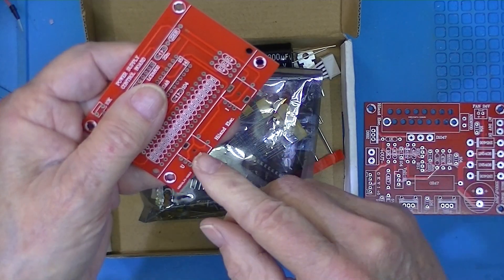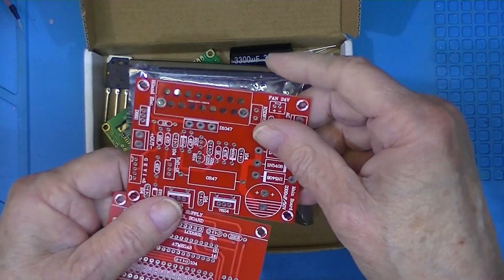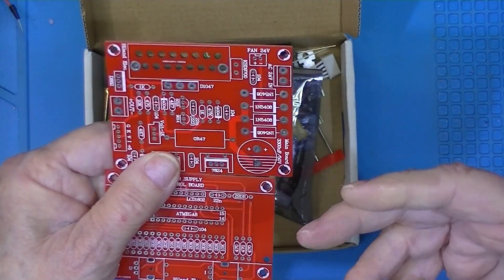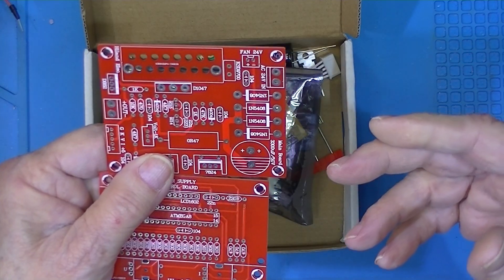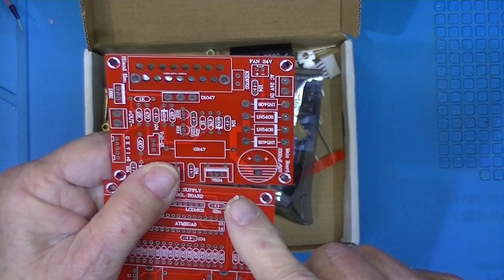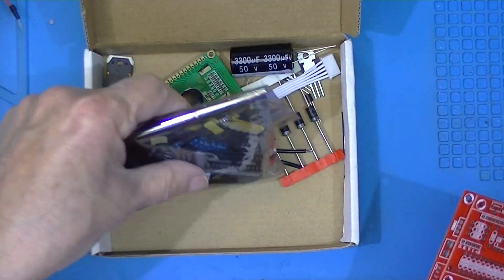But the actual supply measurement of current and voltage is done by analog devices. Now this kit contains all of the parts to populate these two boards.